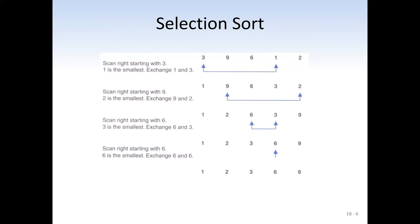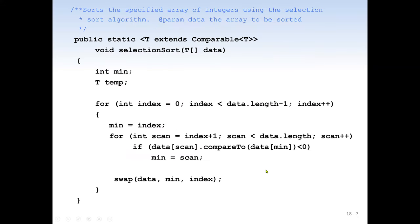Selection sort two steps: go through the items, find the smallest value, swap it with the first item. Go through again, find the smallest value, put it in the second position. We repeat this to the end of the items being sorted.